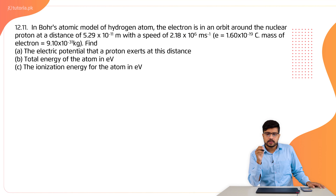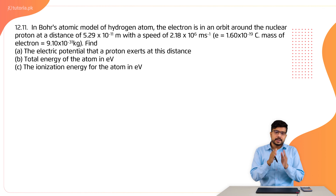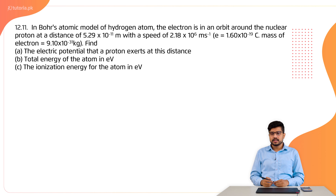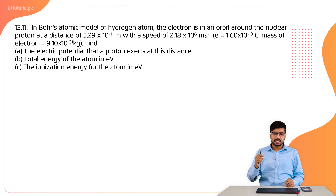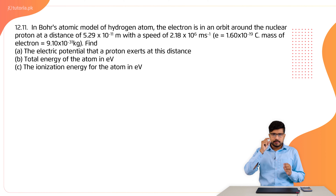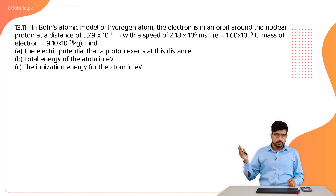In Bohr's atomic model of hydrogen atom, the electron is in orbit around the nuclear proton at a distance of 5.29 × 10⁻¹¹ meter with a speed of 2.18 × 10⁶ meter per second. You have to find out the electric potential of the proton at this distance, and the total energy of the atom in terms of electron volt.